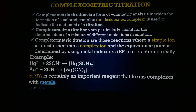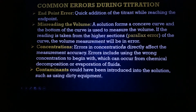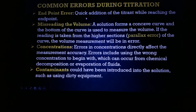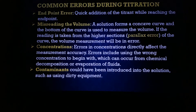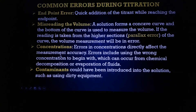Now let us see what are the common errors during titration — this is very important to remember. The first error is endpoint error: adding the titrant too quickly while reaching the endpoint. During titration, you must add the reagent slowly as you approach the endpoint; otherwise it leads to endpoint determination errors, and even 1 mL difference can significantly impact results. Another error is misreading the volume due to parallax error while reading the burette — your eye must be level with the meniscus. For a colorless solution, read the lower meniscus.